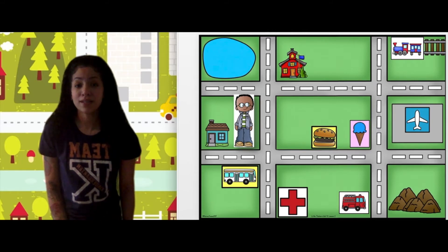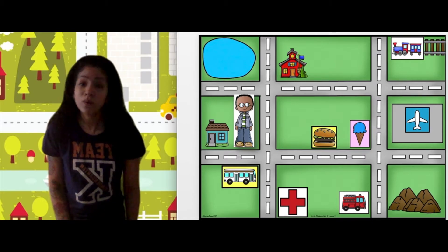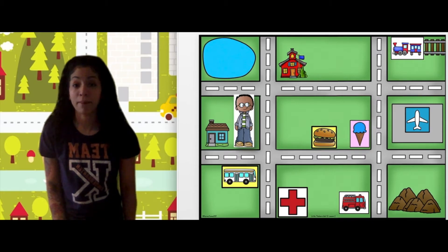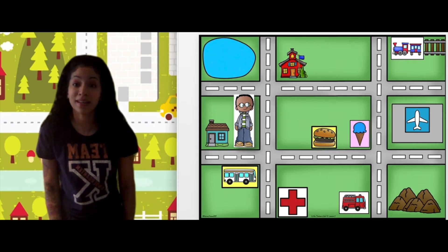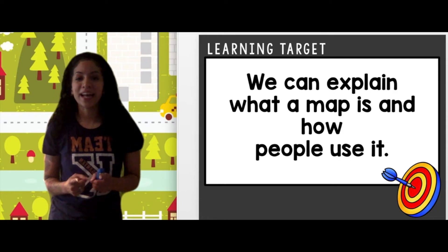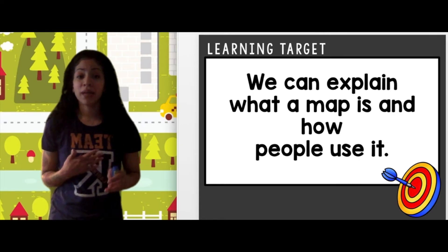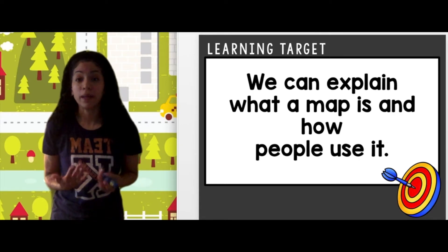So this map shows a person at a house. What types of things do you see in this map? What symbols do you see that can tell you where the things are? Alright, y'all. Excellent. I hope you enjoyed this reading. Today's goal was that we were going to be able to explain what a map is and how people use it.